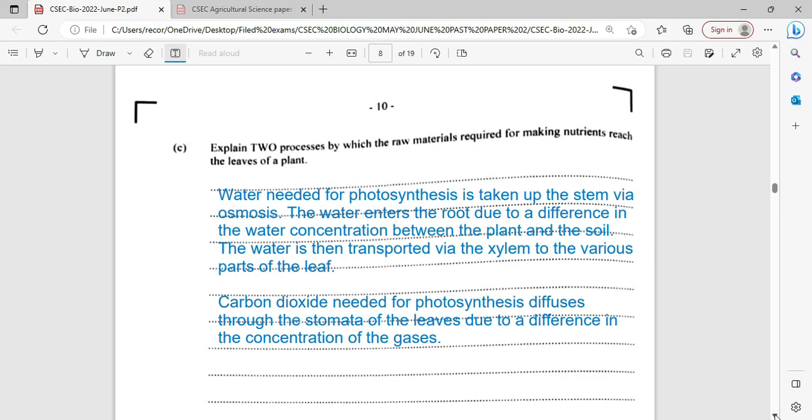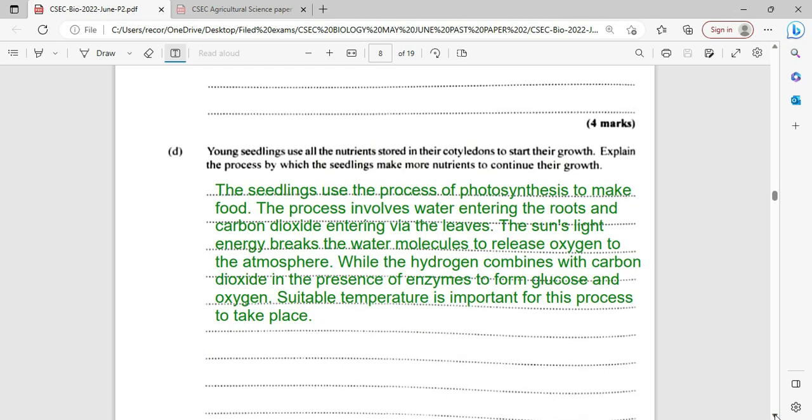Young seedlings use all the nutrients stored in the cotyledon to start their growth. Explain the process by which the seedlings make more nutrients to continue their growth. Of course, this seed is going to use that stored energy in the cotyledon. And as soon as it sprouts out of the ground, it's going to be dependent on sun for adding energy. And that is the reason we can't plant seeds too deep into the ground for them to grow. Because as soon as they exhaust that energy that they have, they are going to die if they don't have other sources of energy.